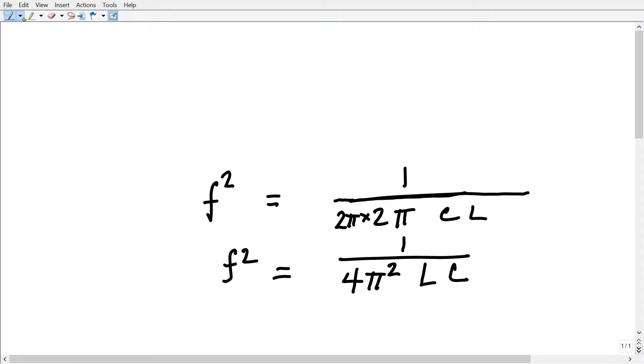and we'll go back and start over at the top. We're going to take the square root of each side of this equation, giving us f equals 1 over 4π², and you take the square root of that, and you get 2π. You take the square root of L times C, and you get that.